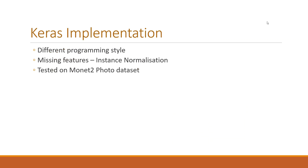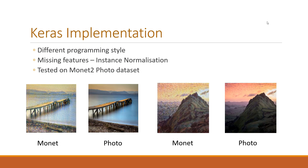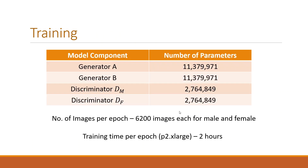Next we implement the code in Keras. After successful implementation, we evaluate its performance on the Monet-to-photo dataset, which contains images by the artist Monet and photorealistic images. These are the results of our model implementation. As can be seen, our model has done a very good job in producing photorealistic images from Monet's original paintings.